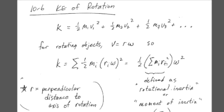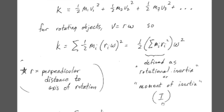And this term right here, mi ri squared, I'm going to define that as the rotational inertia, or the moment of inertia, of the object. And the sum of all those terms will be called the moment of inertia, and I will label it with the capital letter I, standing for inertia.